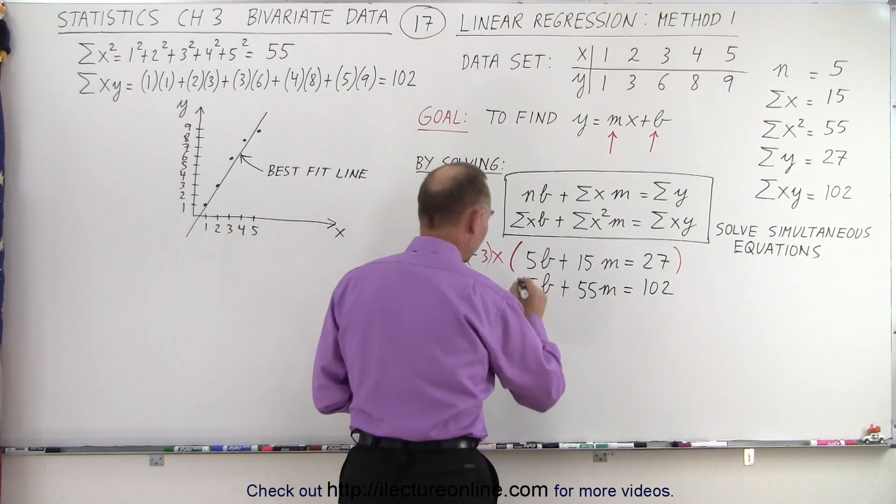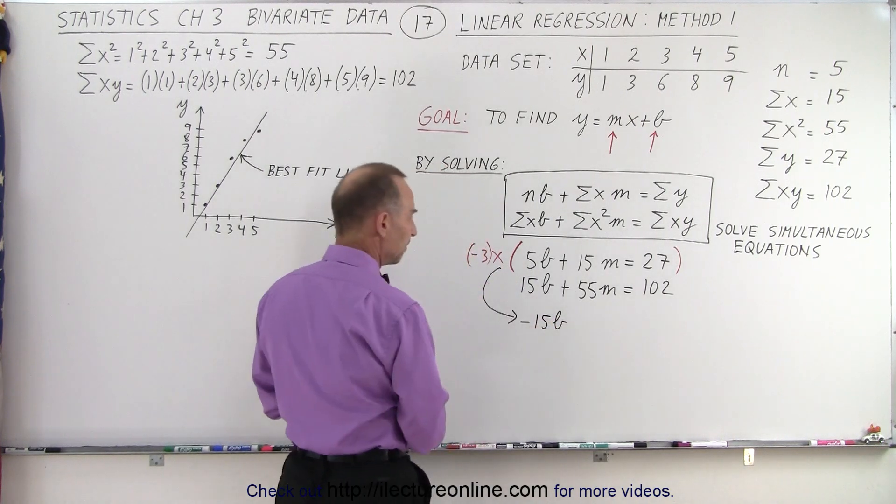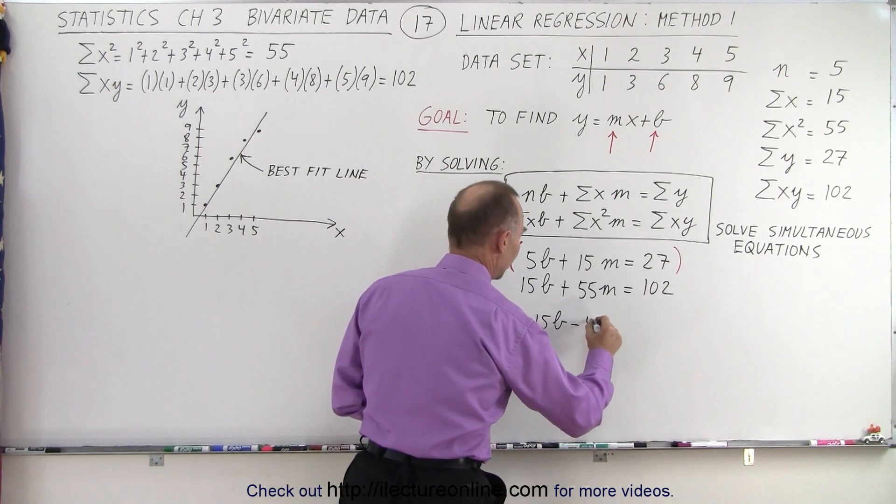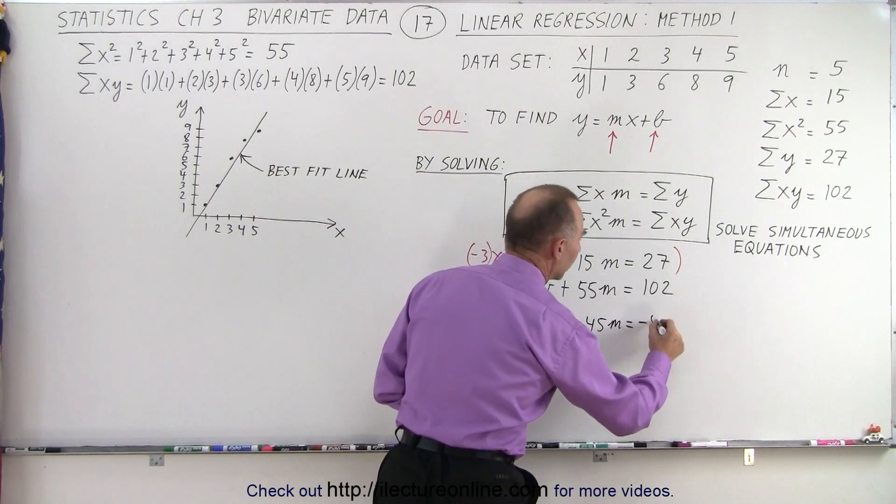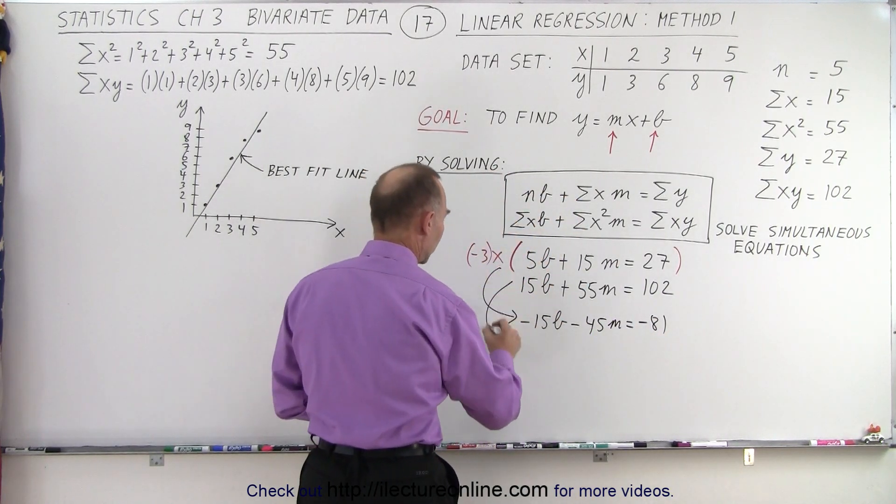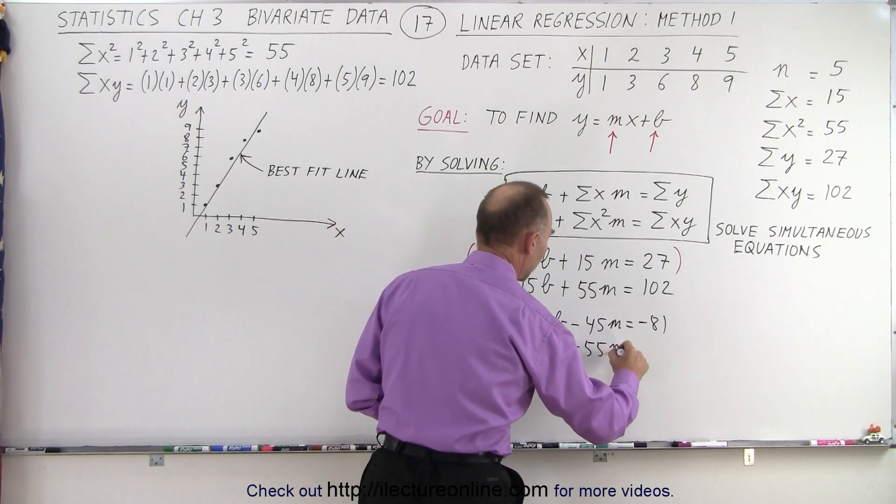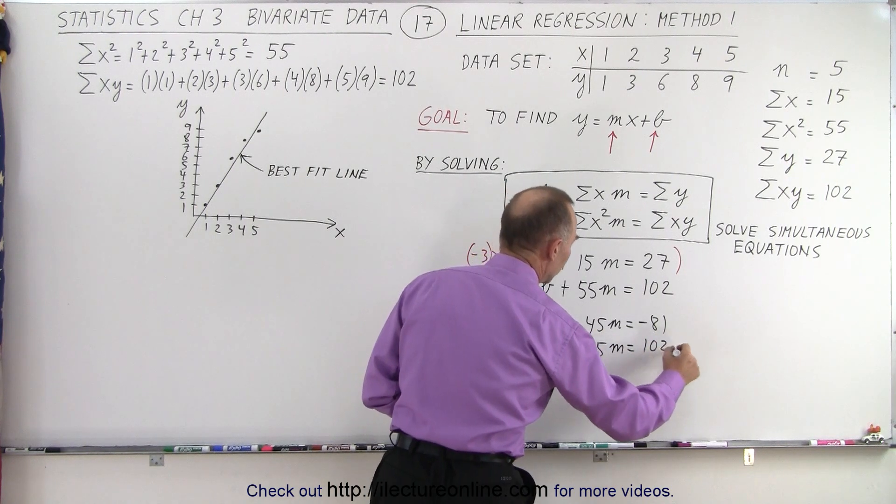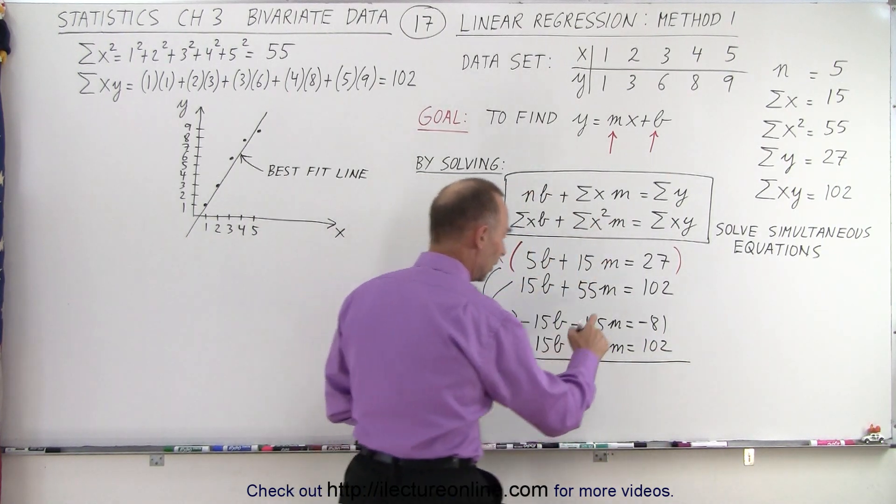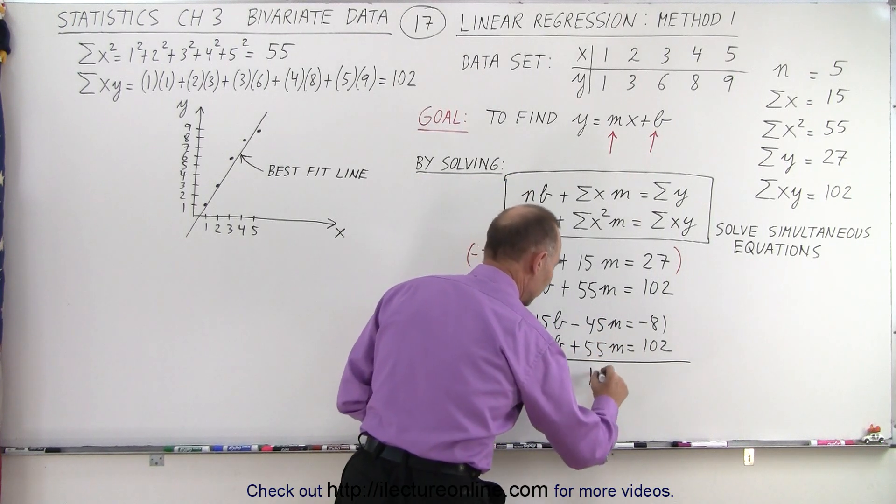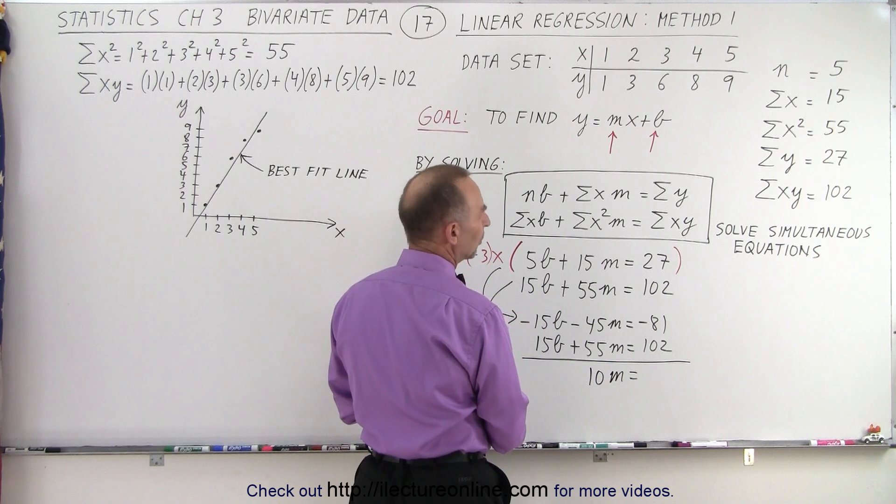So negative 3 times, I'll put that in parentheses like that. So when we do that, our first equation becomes negative 15b, negative 45m, is equal to negative 81. We add that to our second equation, so we get 15b plus 55m is equal to 102. If we then add those up, notice the b's drop out. Minus 45 plus 55, that's 10m, is equal to 102 minus 81.